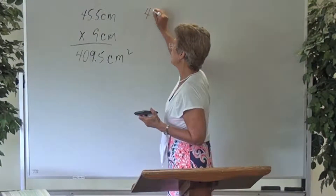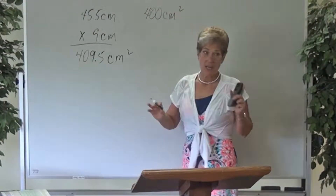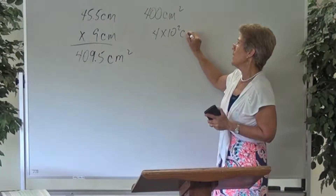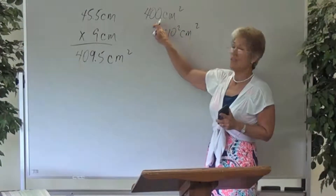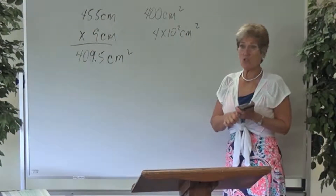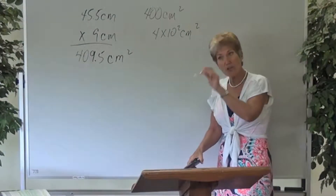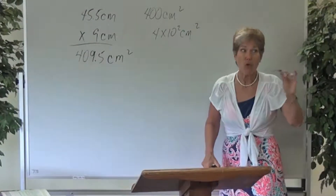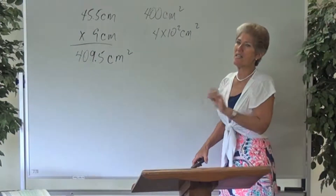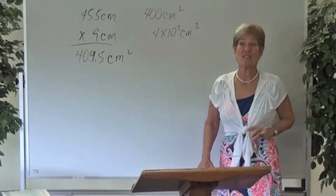That would just be 400 centimeters squared. You could go to scientific notation if you wanted to, but there's no need because those two zeros are not significant figures — they're placeholders. They tell you that it's in the hundreds, but they're not significant because they are not to the right of the decimal at the end of the number, and they are not between two significant figures.